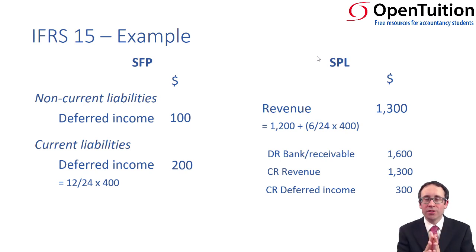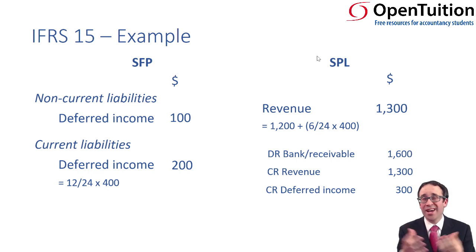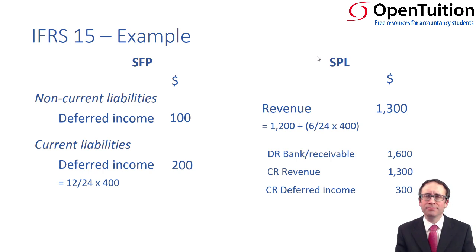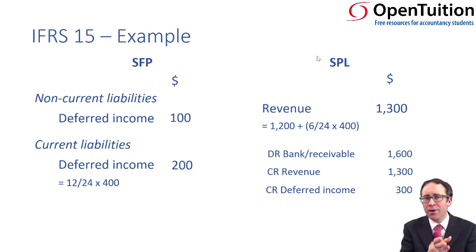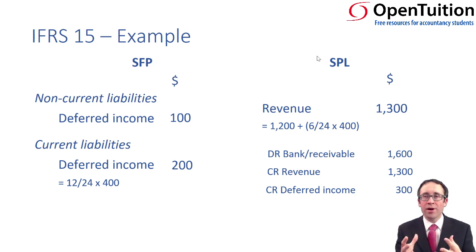This could form part of a published company accounts question, a series of multiple choice questions in section B, or a single multiple choice question in section A — for example, asking what revenue is to be recognised within the year ended December 20X7. As you can see, the key to these questions is to practice. Even if you've worked through the study text, you may still find them difficult. But the more you practice, the easier it becomes.